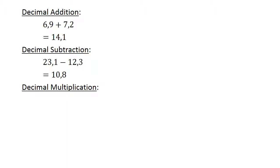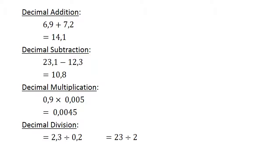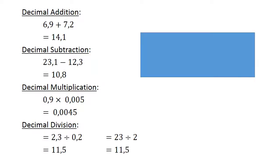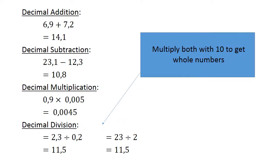Decimal multiplication: 0.9 times 0.005 equals 0.0045. Decimal division: 2.3 divided by 0.2 — we multiply with 10 to get whole numbers — giving 23 divided by 2 equals 11.5.